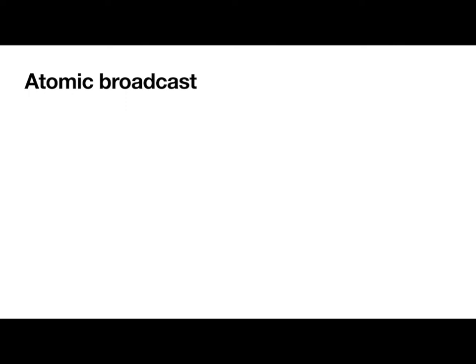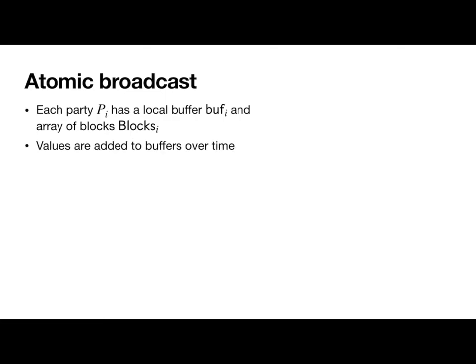Before we continue, let's formally define the problem we're trying to solve so we're all on the same page. In atomic broadcast, each party has a local buffer of values called transactions and a write-once array of blocks. For our purposes, a block is just a set of transactions. Values are added to parties' buffers over time via some external mechanism.